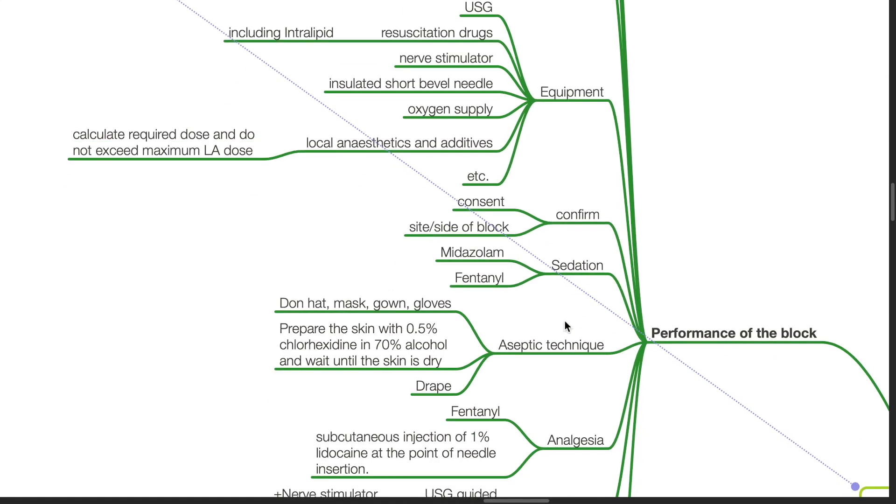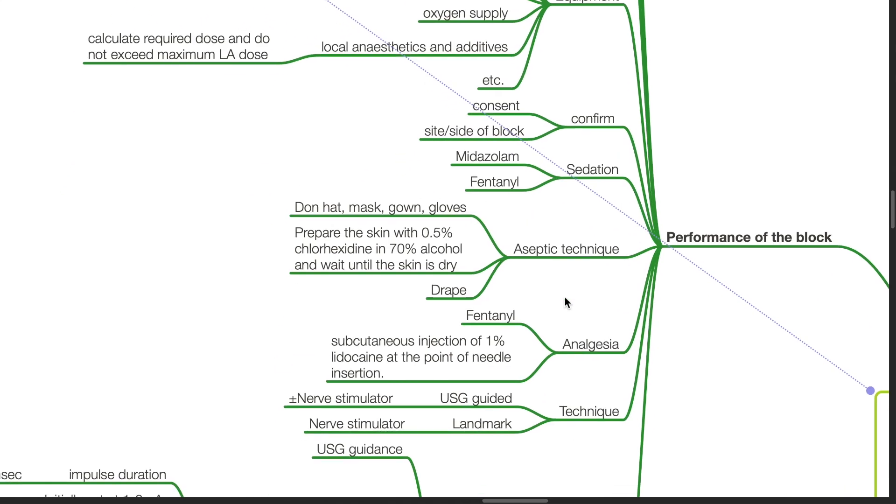Sedation with midazolam and fentanyl. Aseptic technique: don head, mask, gown, and gloves. Prepare the skin with 0.5% chlorhexidine in 70% alcohol and wait until the skin is dry and drape.